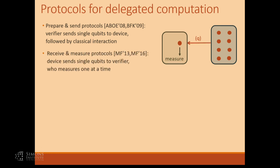There's a dual family of protocols pioneered by Morimae and Fitzsimmons, where now the prover does the whole quantum computation themselves but sends one qubit at a time to the verifier, who measures these qubits as soon as it receives them. Based on the outcomes obtained, it performs a classical computation — there's no quantum interaction there — and determines the outcome of the computation.